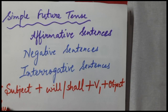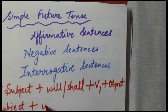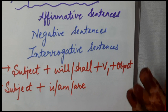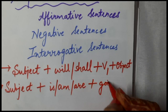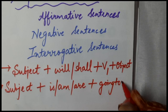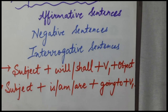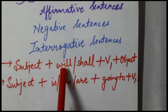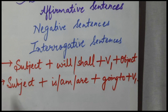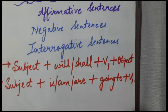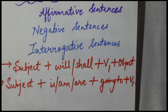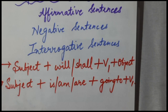We had also learnt that we can say: subject, then is or am or are, and then going to, and then our verb first form. For example, 'I will wait for you' or 'I am going to wait for you.' Similarly, 'she is going to write a letter' and 'he will write a letter.' These are affirmative sentences.